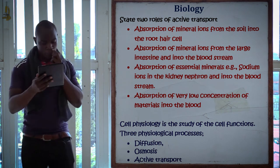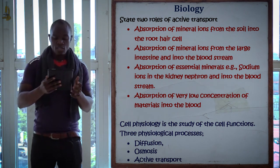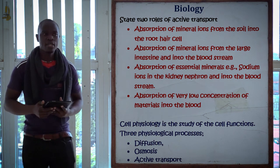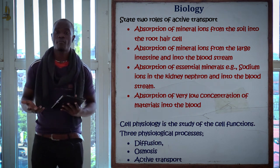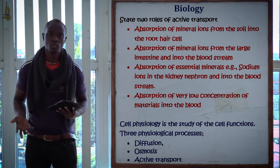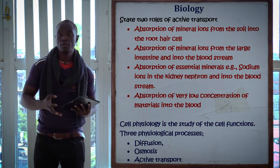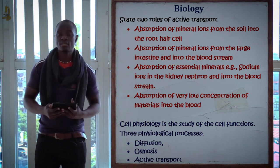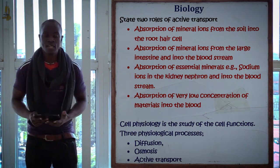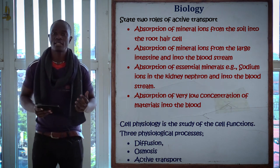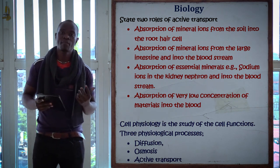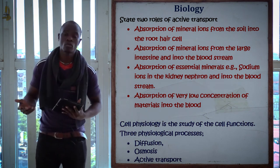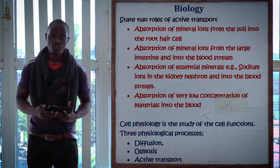There are two roles of active transport. The first role of active transport is that it mainly helps in the small intestine, whereby we have the absorption of food or the absorption of mineral salts from the large intestine. This absorption mainly takes place in the intestines, whereby some materials will be absorbed by active transport and some materials will be absorbed by diffusion.